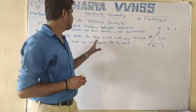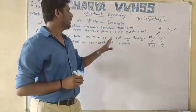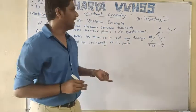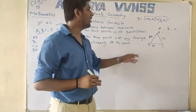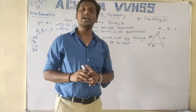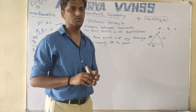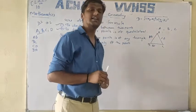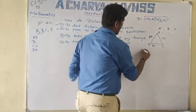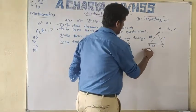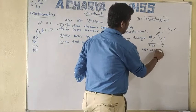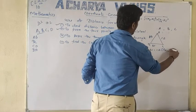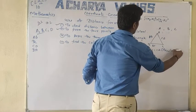So if this is a triangle, which type of triangle is it? I will find the distances AB, BC, and CA. If all three sides are equal, then I will say that it is an equilateral triangle.